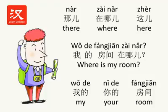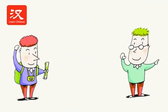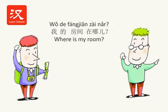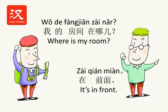The answer to 在哪儿 can be very simple — you don't need to mention the subject of the sentence. For example, if a guest asked the waiter 我的房间在哪儿? the waiter could simply answer 在前面, which means 'it's in front.'